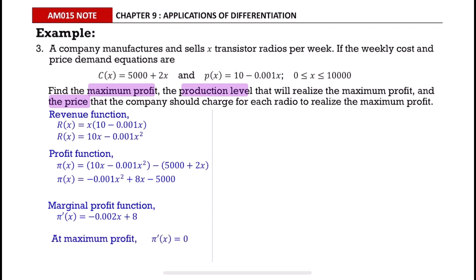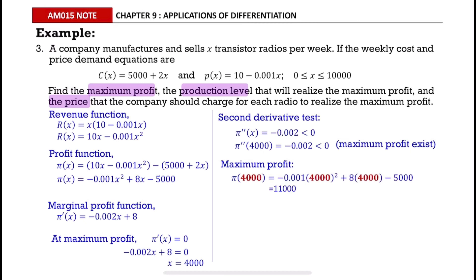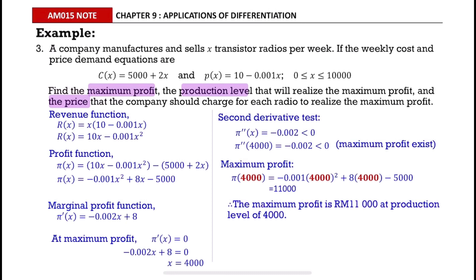At the maximum point, the marginal profit function equals zero. Substitute the function and solve for x. Use the second derivative test to show that maximum profit exists at x = 4,000. Substituting 4,000 into the profit function gives a maximum profit of RM 11,000 at a production level of 4,000 units.